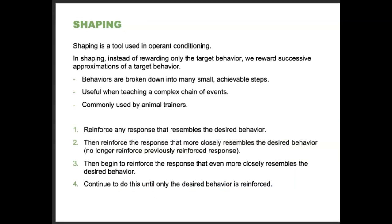In operant conditioning we also use a tool called shaping. Instead of rewarding only the target behavior, we reward successive approximations of a target behavior — behaviors broken down into many small achievable steps. It's useful when teaching a complex chain of events and is commonly used by animal trainers. You first reinforce any response that resembles the desired behavior, then reinforce responses that more closely resemble it, no longer reinforcing previously reinforced responses, and continue until only the desired behavior is reinforced.